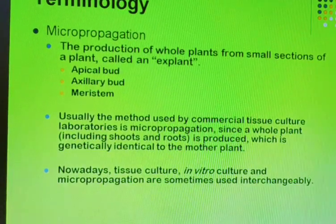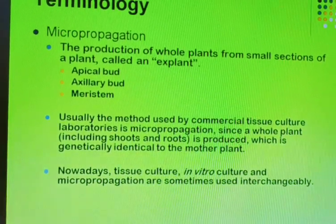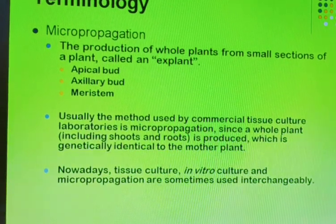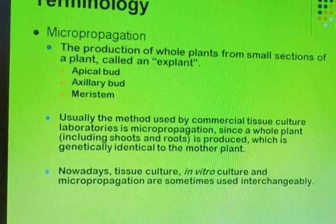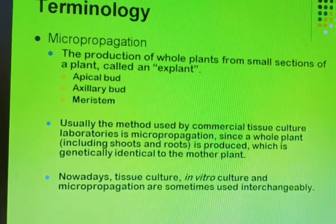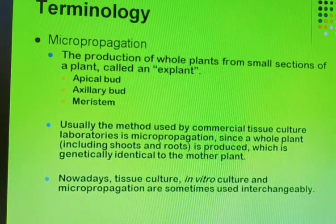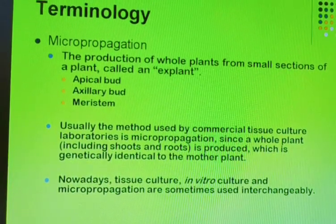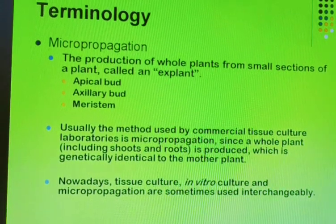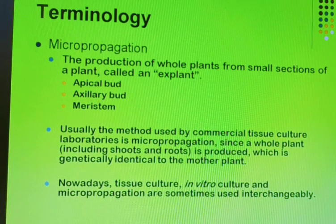The next term is micropropagation. Micropropagation is the process where we grow plants in the lab. When we grow plants not in the lab but in the field — sowing seeds and growing crops — that is known as propagation. Micropropagation means using a small part of the plant, the explant, to produce a whole plant in the lab. That process is known as micropropagation.